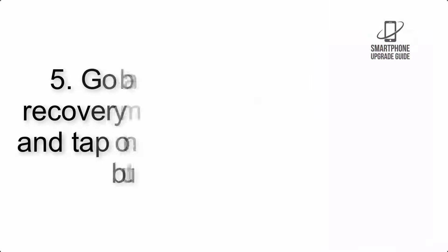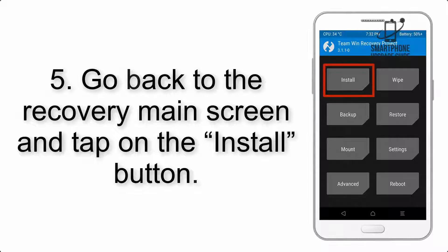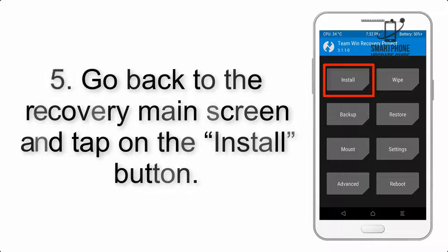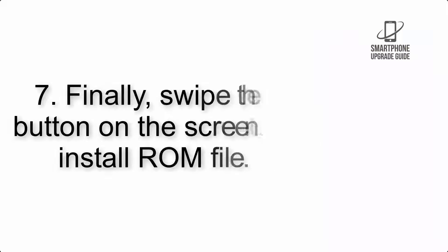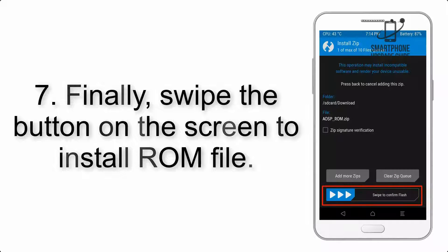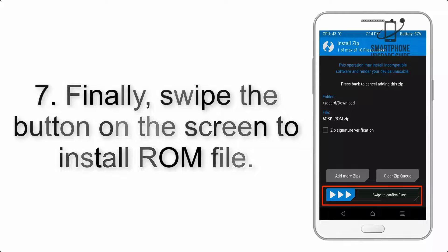Step 5: Go back to the recovery main screen and tap on the Install button. Step 6: Navigate to the storage and select the ROM zip file. Step 7: Swipe the button on the screen to install the ROM file.